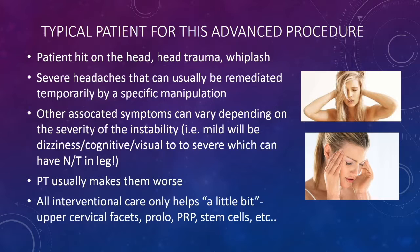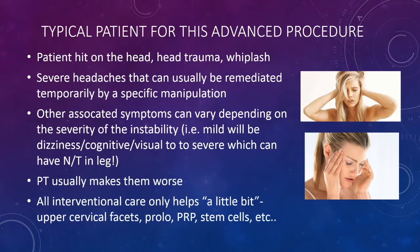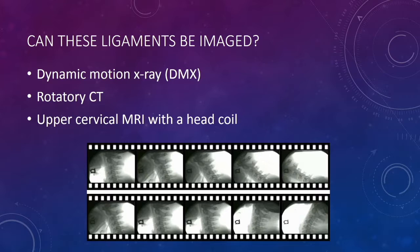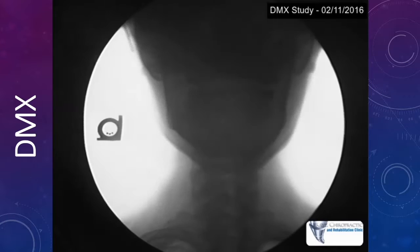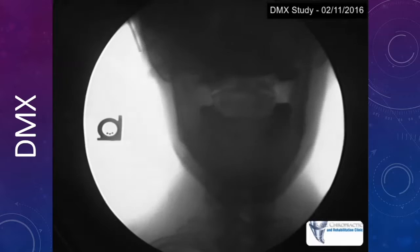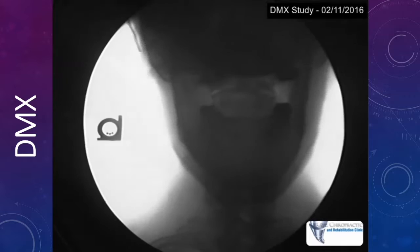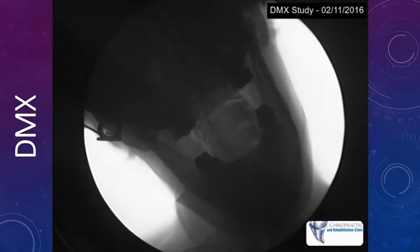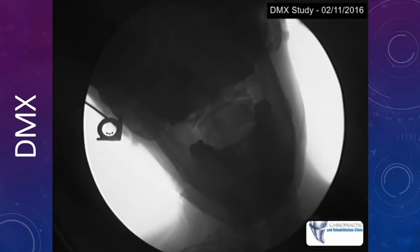The typical patient for this kind of advanced procedure had head trauma, whiplash, and severe headaches that usually can't be remediated — or they can be temporarily with a specific upper cervical manipulation, but it comes back. All existing interventional care only helps a little bit. Can we image these ligaments? The three biggest ways are DMX, rotatory CT, and upper cervical MRI with a head coil and open mouth. DMX is pretty cool — you can image through an open mouth view and see some instability, some lateral overhang happening as the person bends their head.